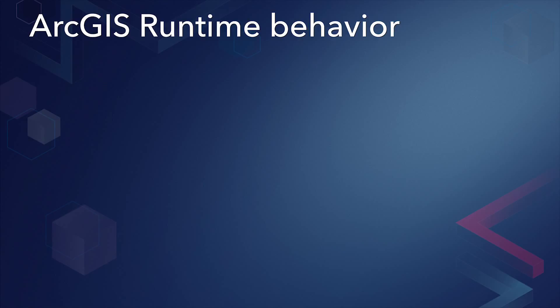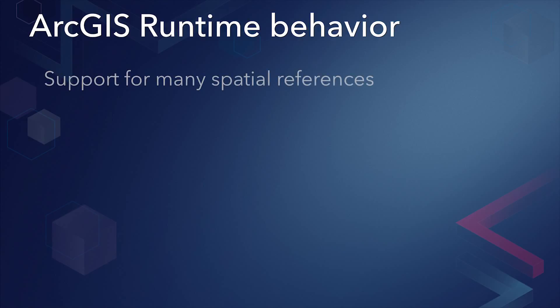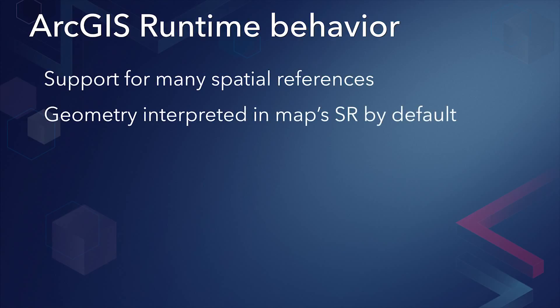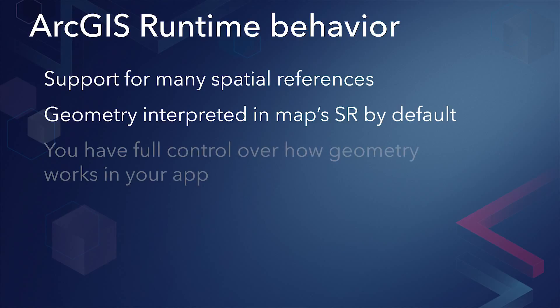ArcGIS Runtime handles this differently. All points are interpreted in the map spatial reference unless a different one is explicitly set. This gives you more control over how geometry is handled in your app, but it also means you need to understand and be deliberate about your choices.